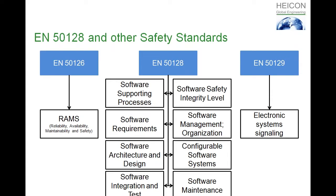The EN 50129 talks about electronic system signaling, which also includes hardware. In the railway there is a bit of differentiation where the EN 50129 is valid and where the EN 50128, but still: the EN 50128 covers the software, the EN 50129 covers hardware, and from a system point of view it is more the EN 50129.